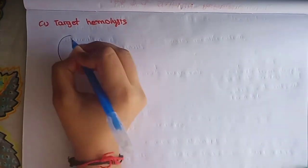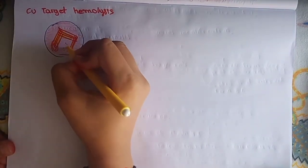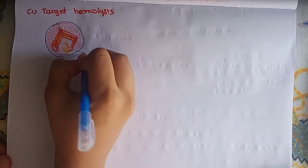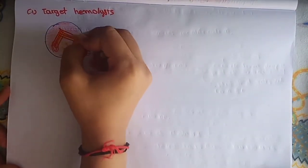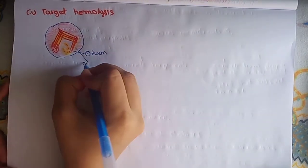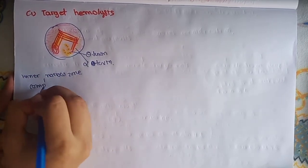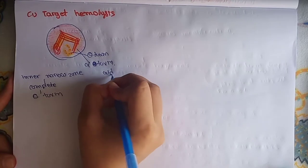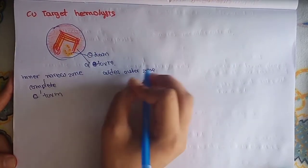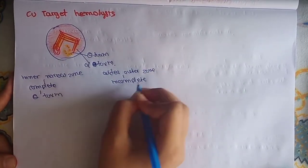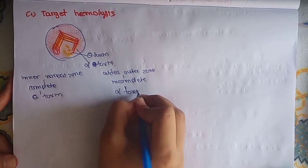First is target hemolysis. Suppose this is the blood agar. It will show inner narrow zone of complete hemolysis due to theta toxin and outer wider zone of incomplete hemolysis due to alpha toxin. So what is the result in target hemolysis? Inner narrow zone due to complete hemolysis because of theta toxin and wider outer zone because of incomplete hemolysis due to alpha toxin.